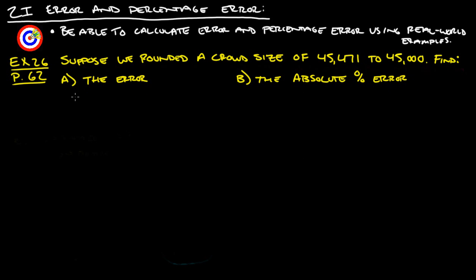Let's start with the error. We're going to take the estimated size 45,000 minus 45,471 to give us negative 471 as our error.